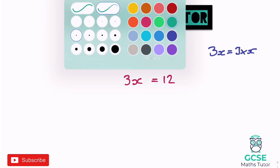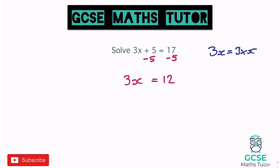We have 3x equals 12. Since 3x means 3 times x, to reverse that we divide by 3. Rather than writing 'divide by 3' underneath, I like to write it as a fraction. Dividing both sides by 3 cancels the 3s on the left, giving us x equals 12 divided by 3, which equals 4.